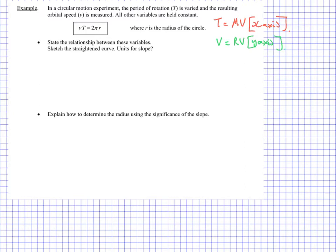Now we have a little relationship given to us. We're told that speed multiplied by period is equal to 2πr. Of course 2πr being the circumference of a circle. And r is the radius. So let's just state the relationship between these variables, and then once we've done that we'll sketch the straightened curve.